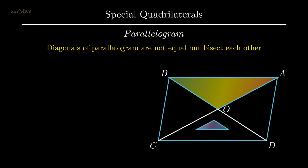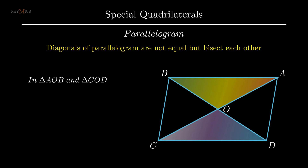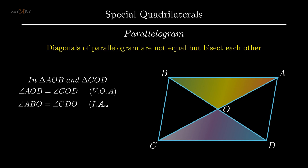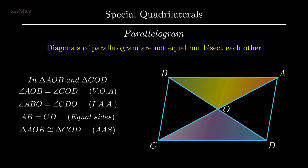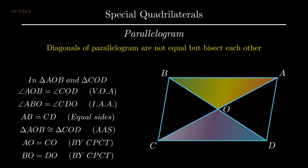To prove diagonals of a parallelogram bisect each other, consider triangle AOB and triangle COD. As vertically opposite angles are equal, angle AOB equals angle COD. Since side AB is parallel to side CD, interior alternate angles are equal, thus angle ABO equals angle CDO. Side AB equals side CD as opposite sides of a parallelogram are equal. Therefore by angle-angle-side rule, triangle AOB is congruent to triangle COD. By corresponding parts of congruent triangles, segment AO equals segment CO and segment BO equals segment DO. Hence diagonals of a parallelogram are not equal but bisect each other.